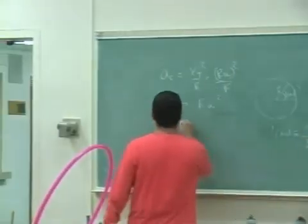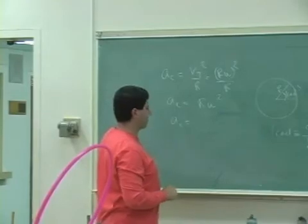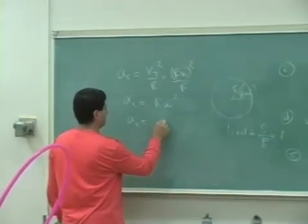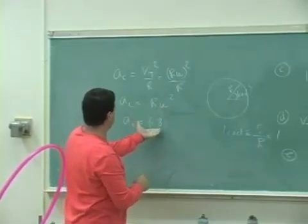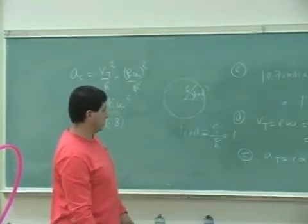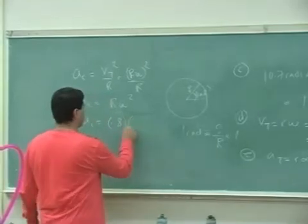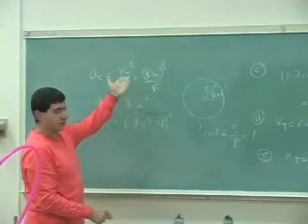So you have here a centripetal is equal to what? r, which was 0.8. So if I want to use this version, I'll just do 0.8 times my omega which was 1.14 squared. That also is going to give you the same answer. So either version.